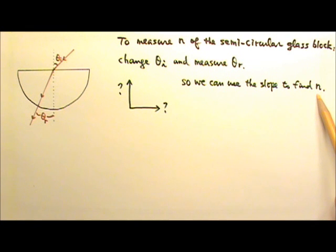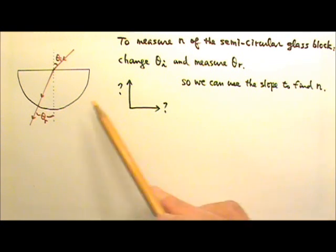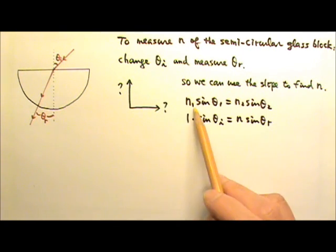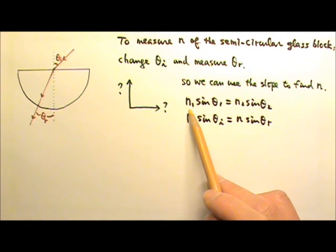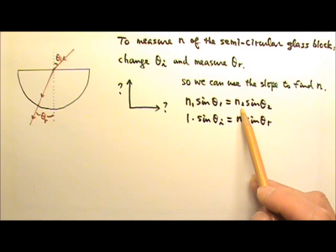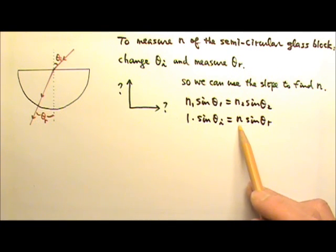What quantities should we plot in a graph so that the slope of the best fit straight line can be used to find the index of refraction n of this glass? Again, we can write an equation first. It's the refraction of light, so we can use Snell's law, n₁ sin θ₁ equals n₂ sin θ₂. Medium 1 is air, so n₁ is 1, and n₂ is the index of refraction we're looking for, the n of the glass.